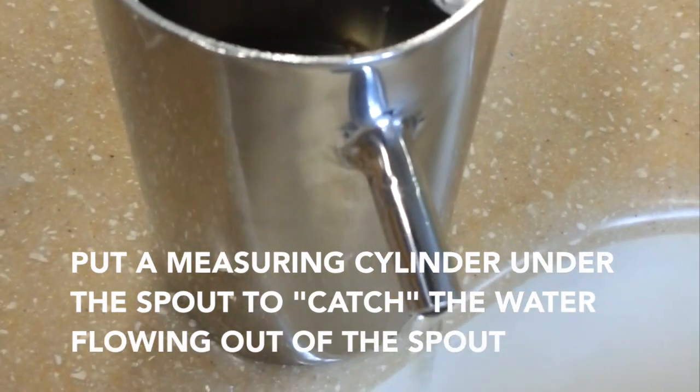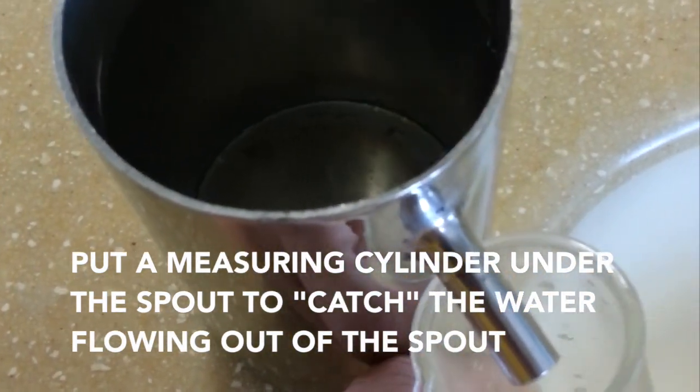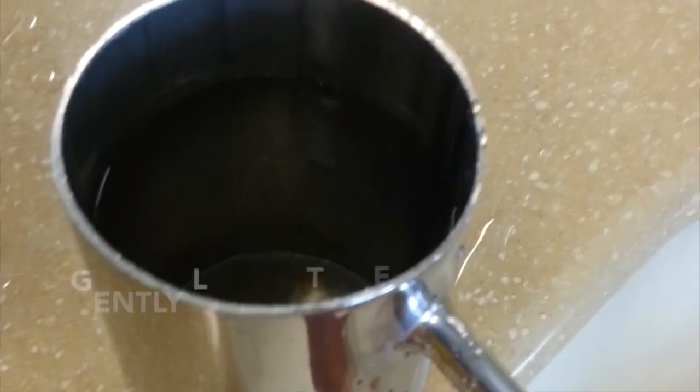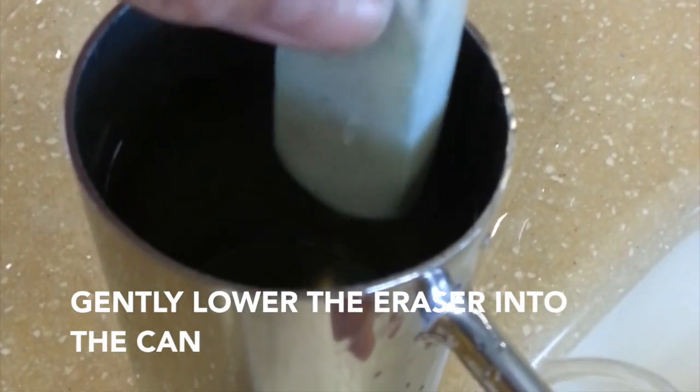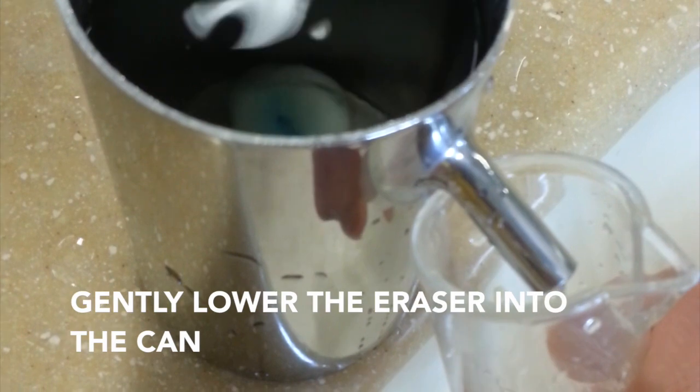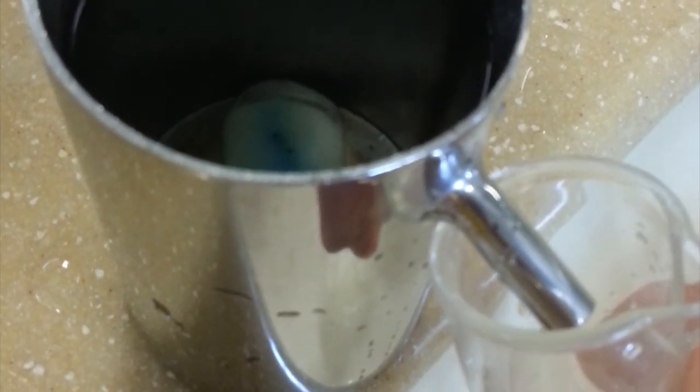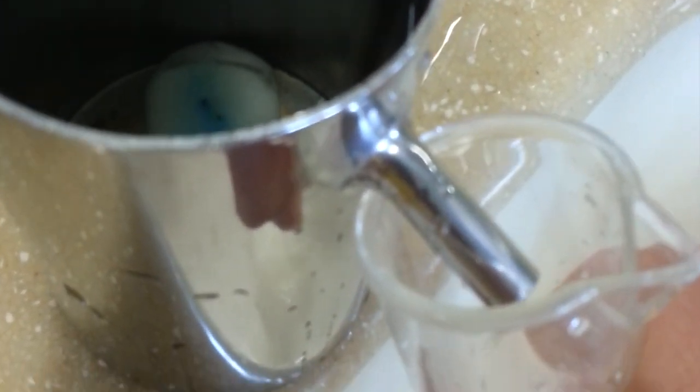Next, place a measuring cylinder under the spout of the can to catch the overflowing water when the eraser is placed into the can. We will gently lower the eraser into the Eureka can, ensuring no water splashes to prevent any accuracy disputes and check that the eraser is fully submerged into the water.